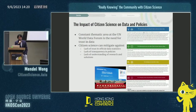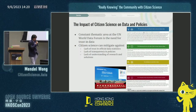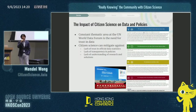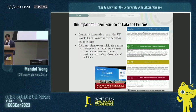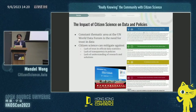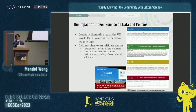From a data and policy standpoint, looking at the UN World Data Forum: the constant theme over the last eight years since the forum was established is the lack of trust in data. There is a fundamental trust issue from people about what comes out of survey data in terms of policy. Citizen science really helps to mitigate that because you're actually involving people to help gather the data — so people understand where the data is coming from, why it's put together, and therefore the conclusions that come out of it.